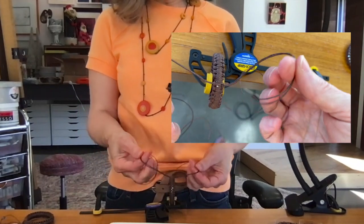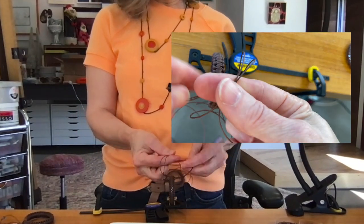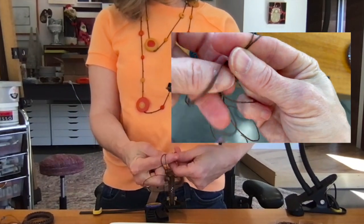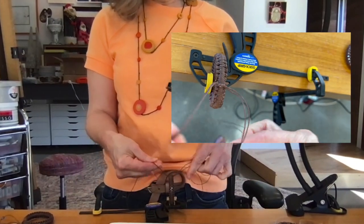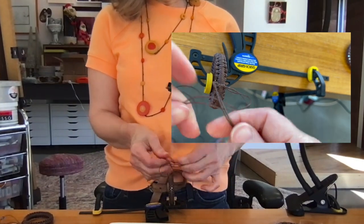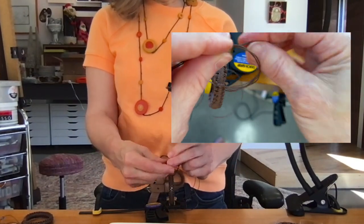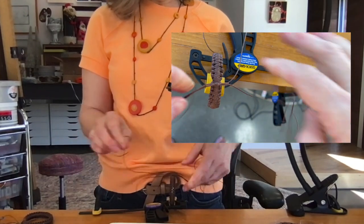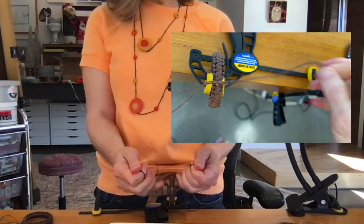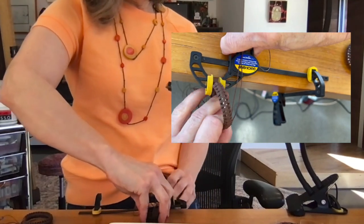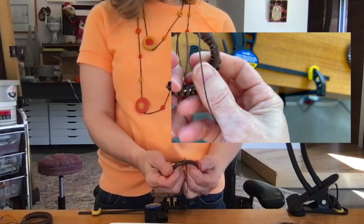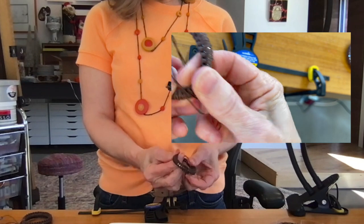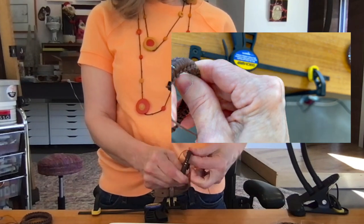You're just going to make a square knot. So right over left, left over right, and then that knot won't come undone. Now what I do is it's best to have that knot on the inside where you don't see it, and so I just twisted the whole thing around. Now the knot's on the inside.